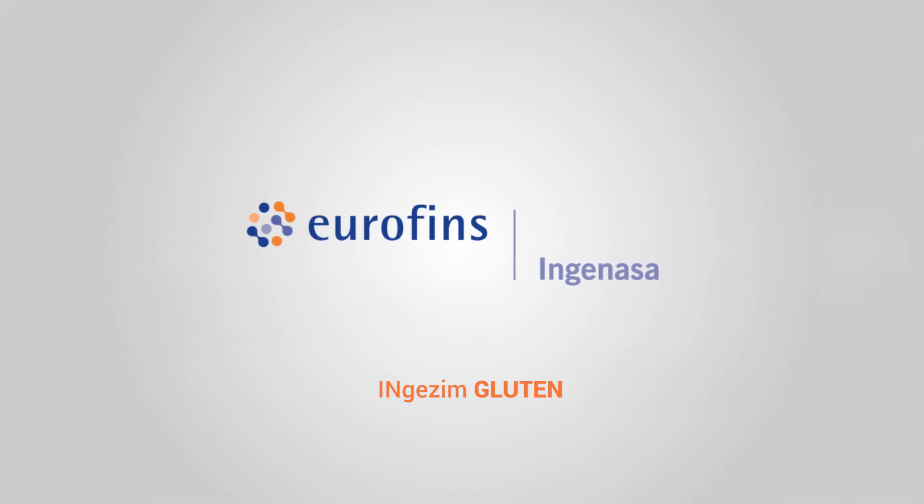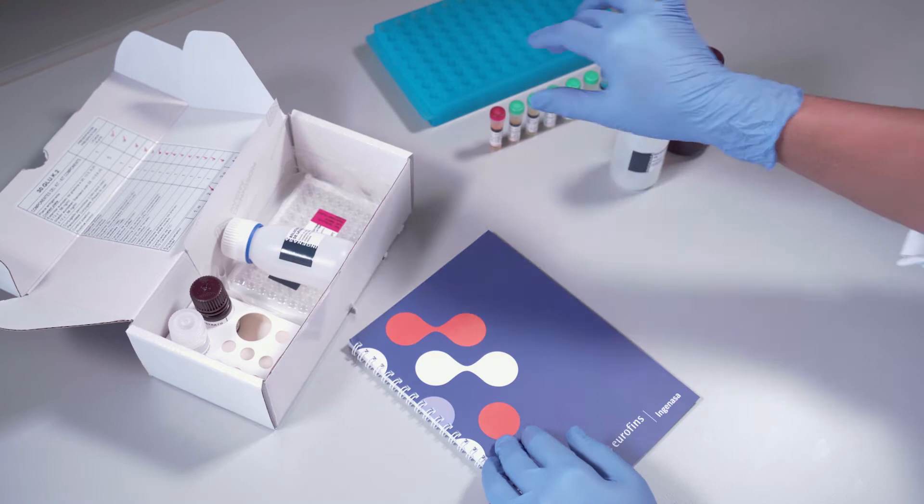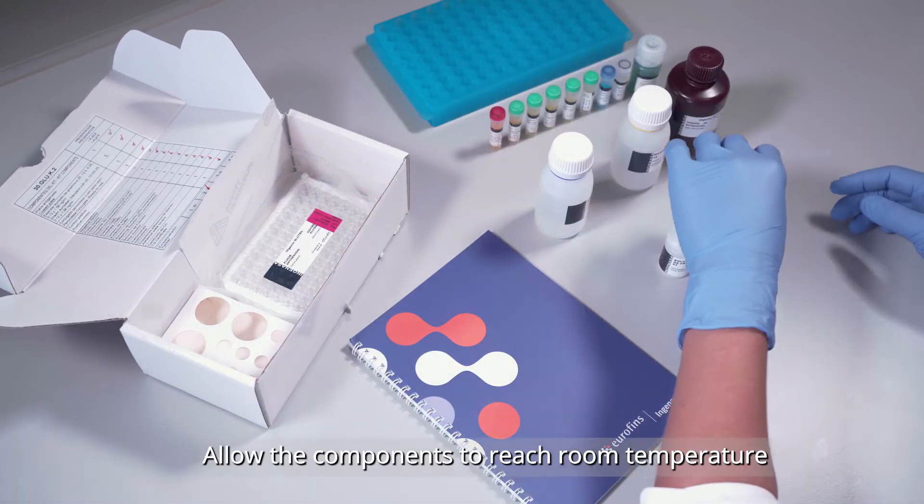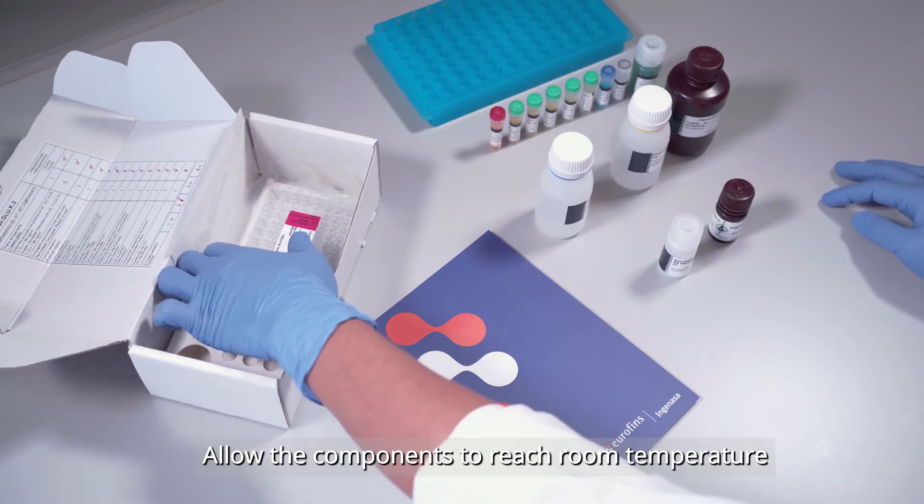IngeSim gluten is an ELISA based on the R5 monoclonal antibody for the detection of gluten in foodstuffs and environmental samples. Allow the components to reach room temperature.